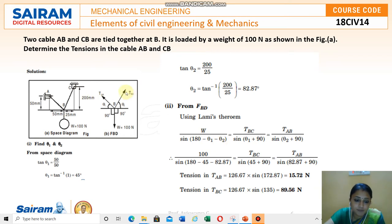See the equation. Next one is TBC divided by theta 1 plus 90 degrees. TAB divided by the sine of angle between other two forces, theta 2 plus 90. Just add it. Finally you can get the value for TAB, tension in the cable AB and tension in the cable BC.